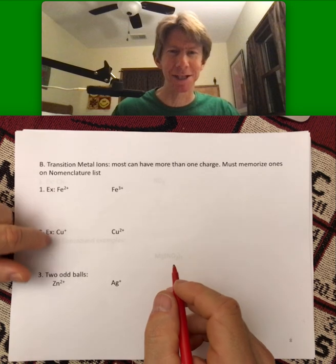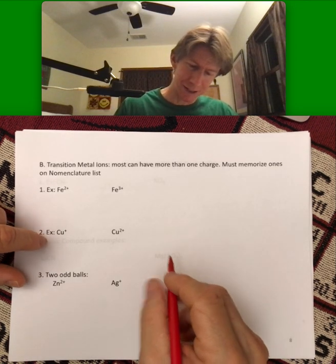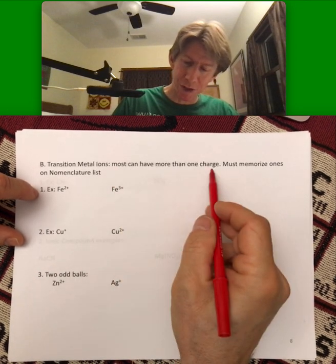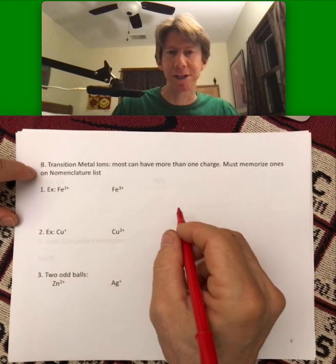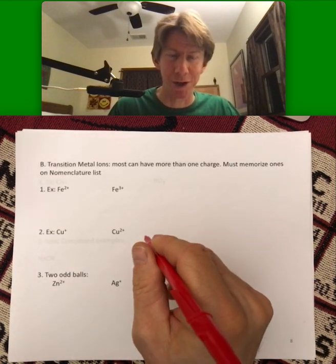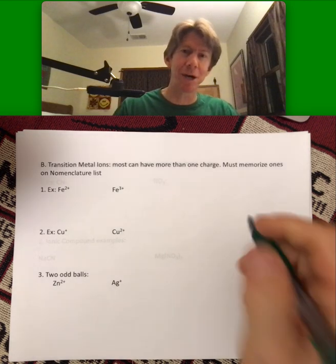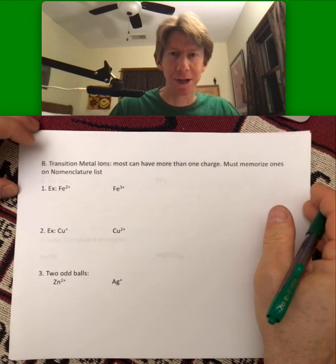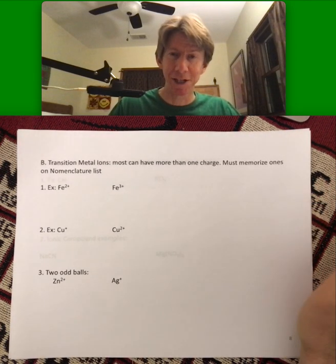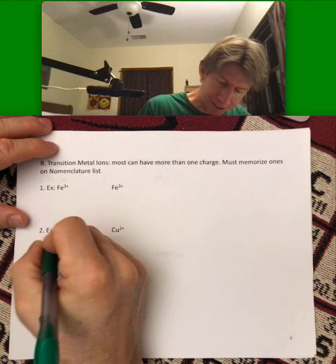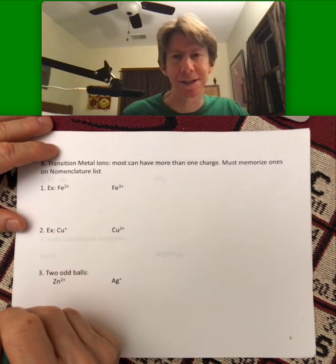I'll skip down to example two since I just did it. So most have more than one charge. You must memorize the ones on the nomenclature list. There's actually a ton more, but we just have you memorize the ones on the nomenclature list. That should be enough for now. So this one here, the name is copper one.